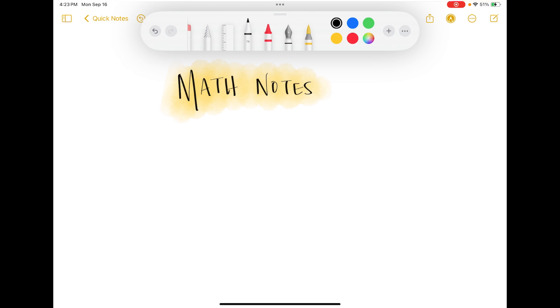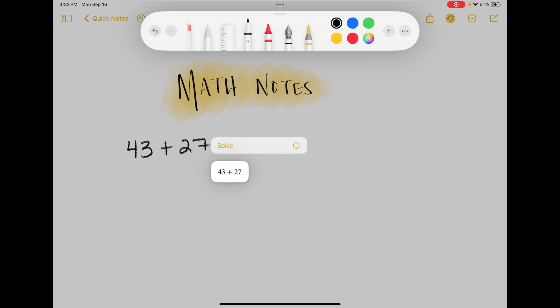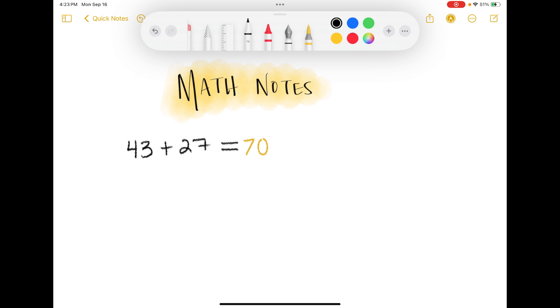Any type of calculations that you do, like that you would just type into a normal calculator. So if I wanted to do 43 plus 27, as soon as you write what you want to add, when you do an equal sign it's going to say hey do you want to solve this, and then you tap on solve and it's going to work it out.